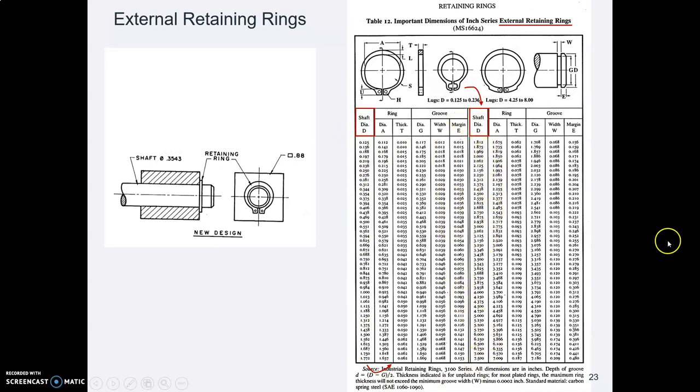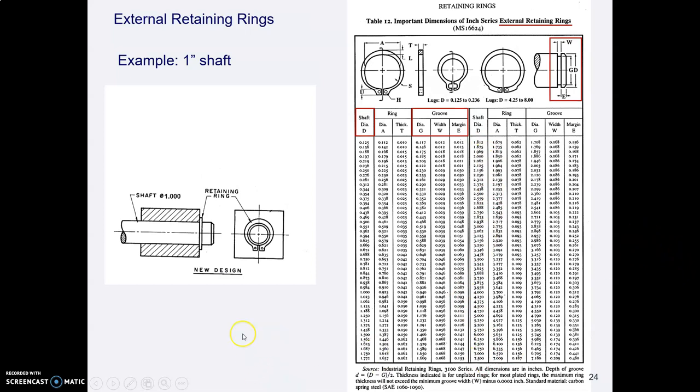So let's say you have a one inch diameter shaft. So there's the one inch diameter. Looking at the picture up here we see what dimensions we can look up. There's g the diameter of the groove, there's w the width of the groove, and there's e how far it should be from the groove to the end of the shaft.